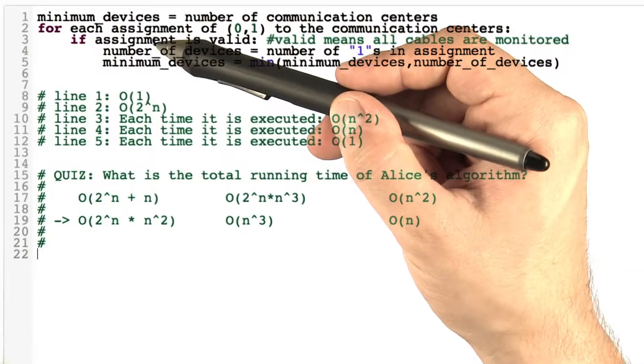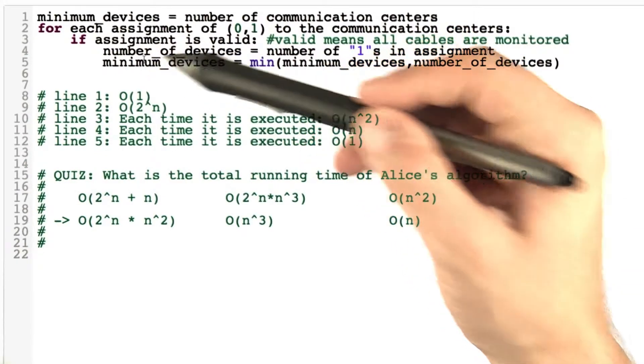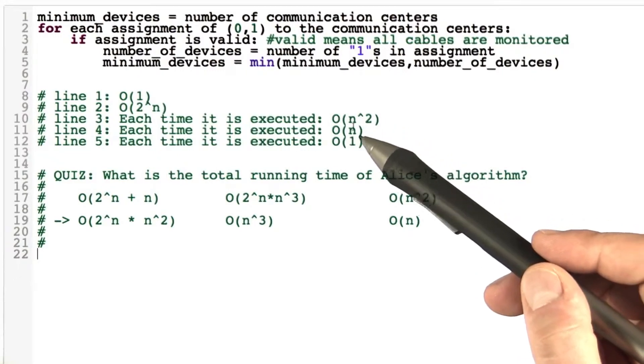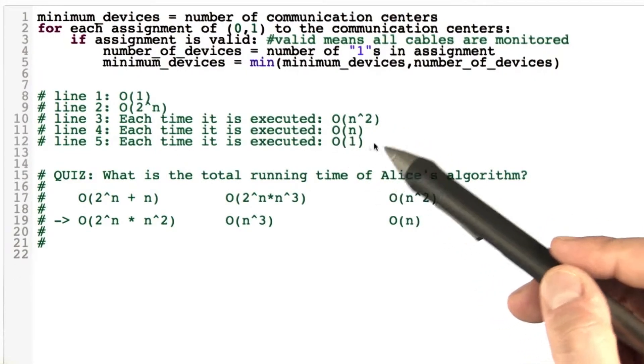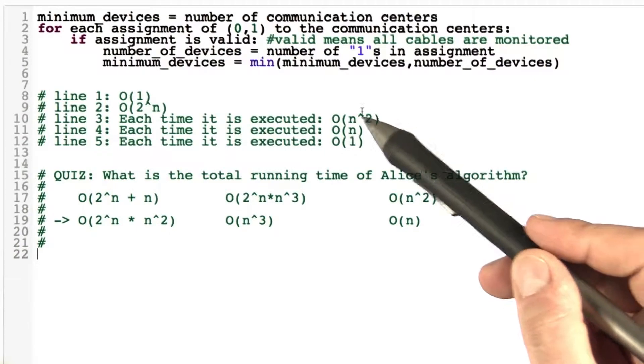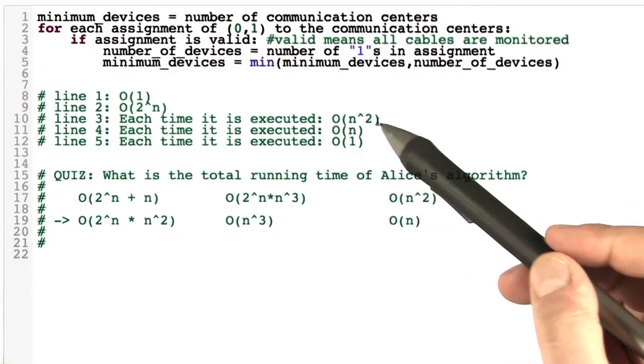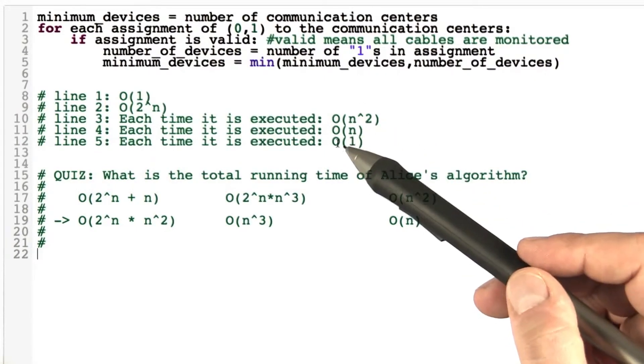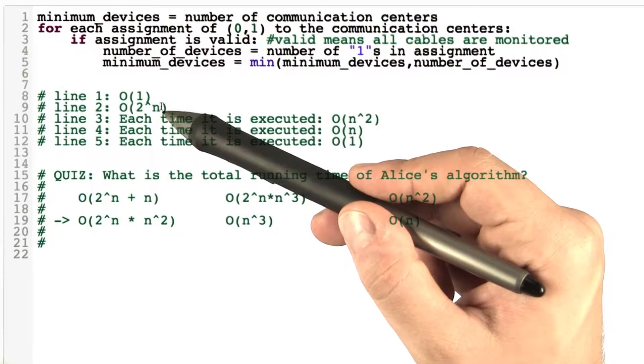So the maximum time that lines 3 to 5 take is O of n squared plus O of n plus O of 1. So the largest growing term here is O of n squared, so the inner loop takes O of n squared time. And that is executed 2 to the power of n times.